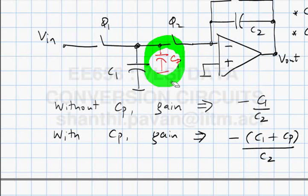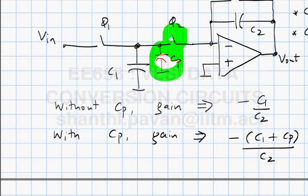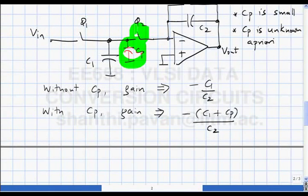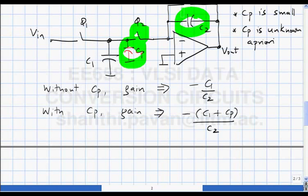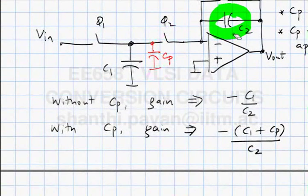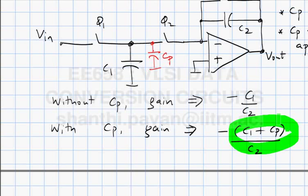In practice there are parasitics at every node, arising from wire length and the switches, which are MOS switches with depletion regions between drain-substrate and source-substrate. These parasitic capacitances do not track C1 and C2 when temperature changes. C1 and C2 are made with parallel metal plates — different from the parasitics you have no control over.